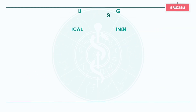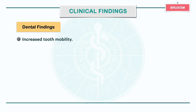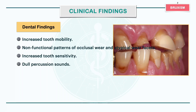The clinical findings of bruxism depend on the frequency, intensity and age of the patient. Dental findings include increased tooth mobility, which may be more prominent in the morning, non-functional patterns of occlusal wear and atypical wear facets, increased tooth sensitivity due to excessive abrasion of enamel, dull percussion sounds and soreness to biting stress.